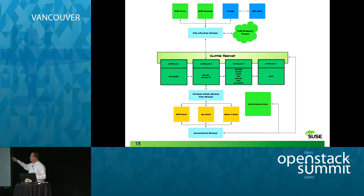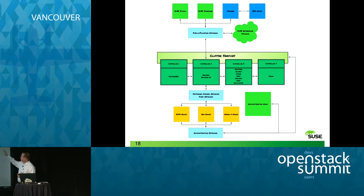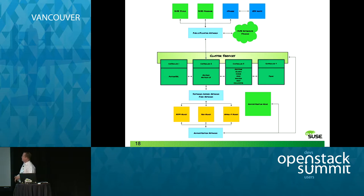Coming back to our diagram: the blue represents the networks. The admin network determines how many hosts you can have. The software-defined network gives you a bit more flexibility. Then you've got your fixed network and the public/floating network to expose out to the outside world.